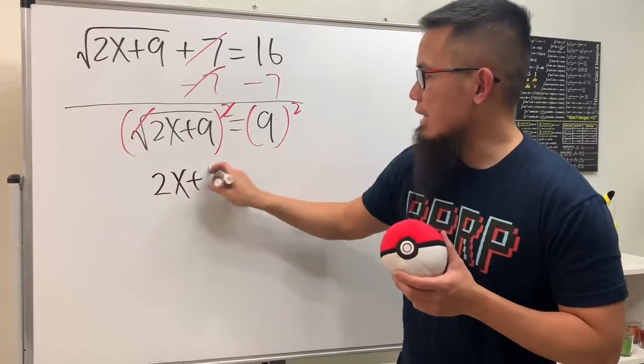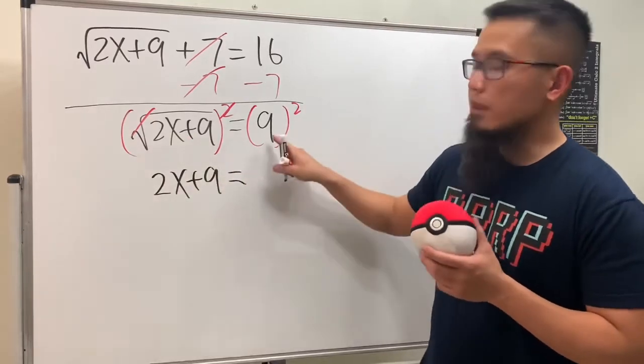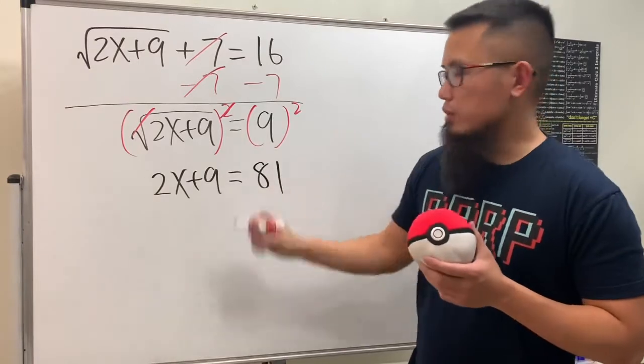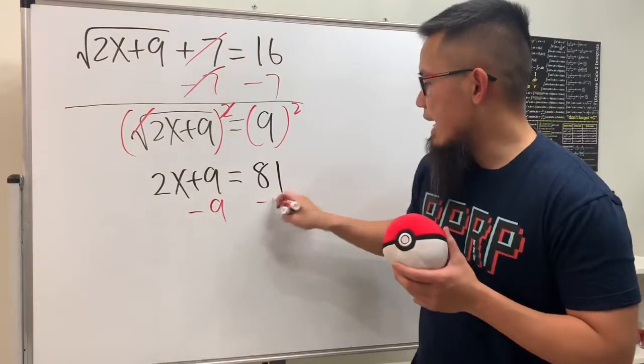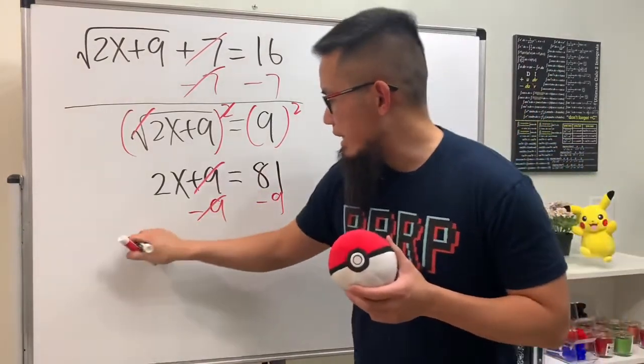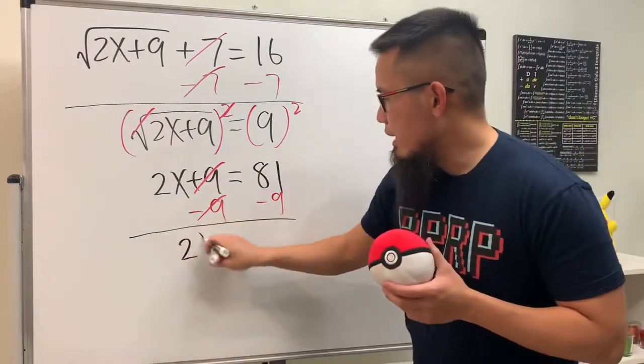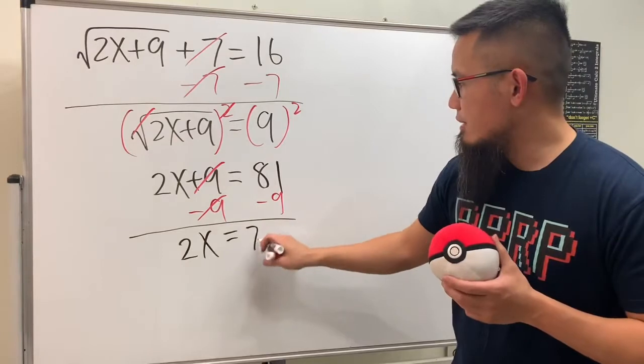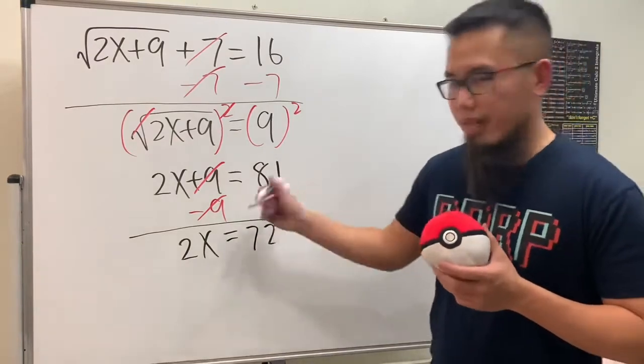All right, from here we just do the usual business. Minus 9 on both sides, and then we get 2x equals—this should be 72.